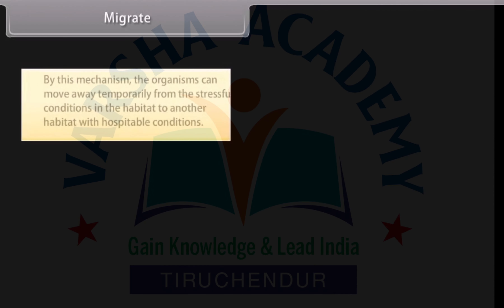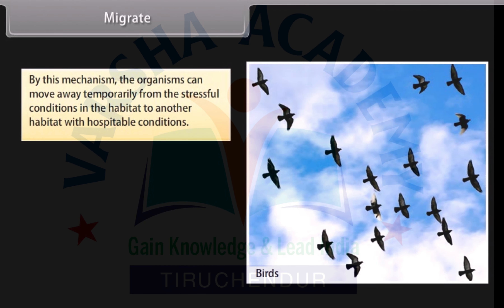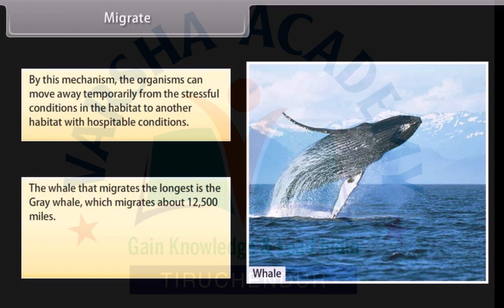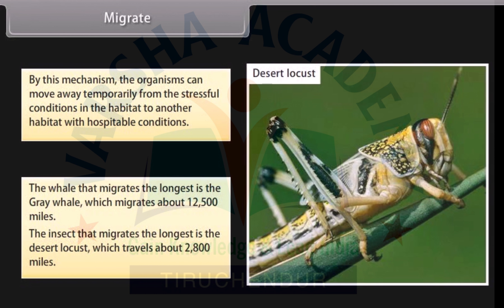Migrate: By this mechanism, organisms can move away temporarily from stressful conditions in their habitat to another habitat with hospitable conditions. The whale that migrates the longest is the grey whale, which migrates about twelve thousand five hundred miles. The insect that migrates the longest is the desert locust, which travels about two thousand eight hundred miles.